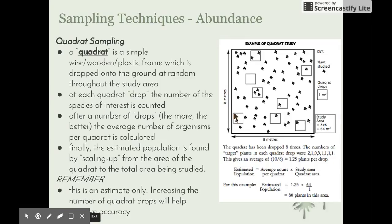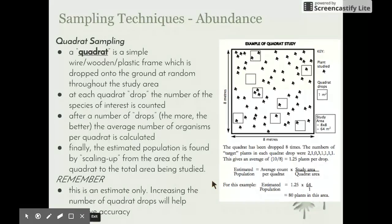To calculate the estimated population for the whole space, we use: average count per quadrat drop × total study area ÷ quadrat area. For this example, the estimated population equals 1.25 × 64 ÷ 1 = 80 plants. However, we need to remember that this is just an estimate. Increasing the number of quadrat drops will help increase our accuracy and give a much closer idea of the actual population.